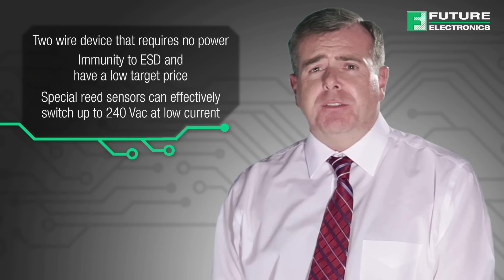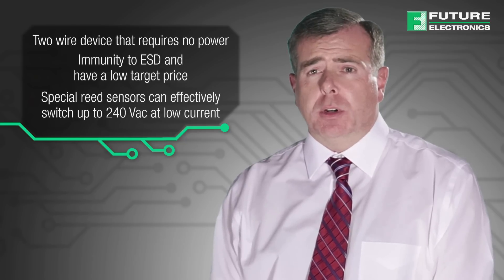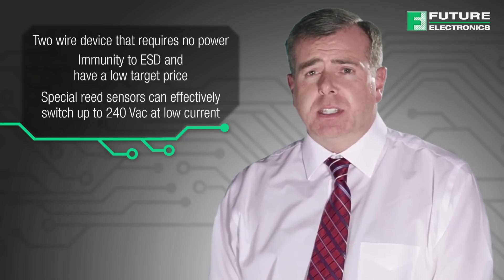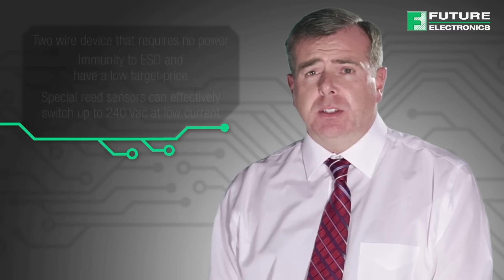Special reed sensors can effectively switch up to 240 VAC at low current. A Hall device is typically limited between 5 to 24 VDC and less than 50 milliamps.